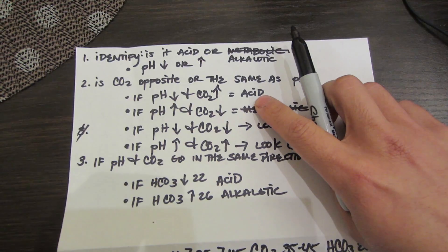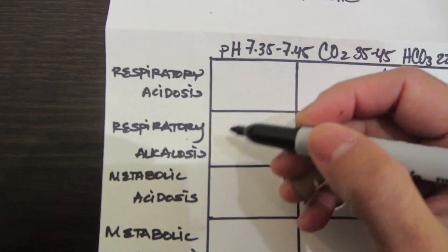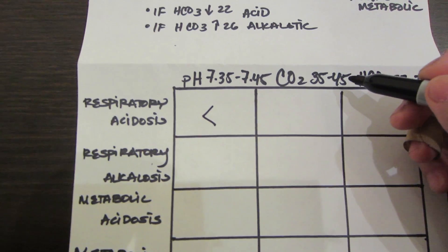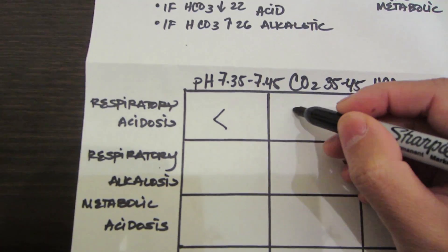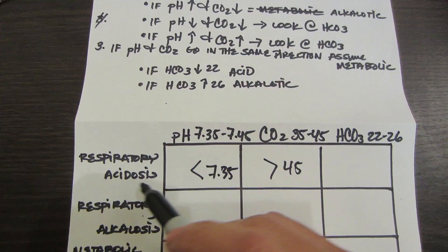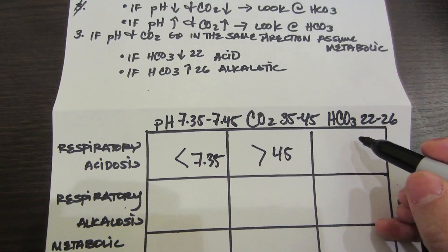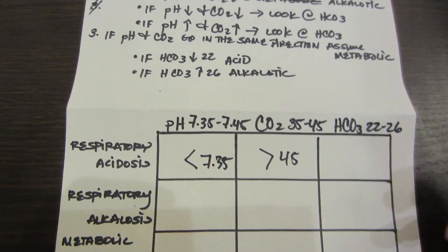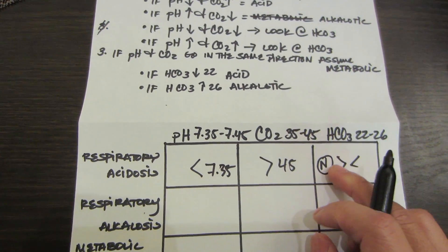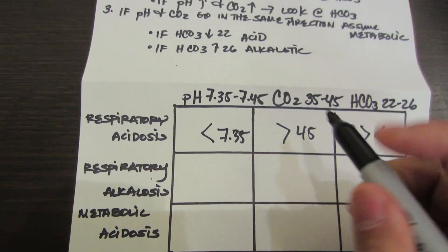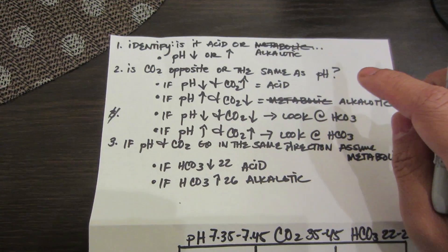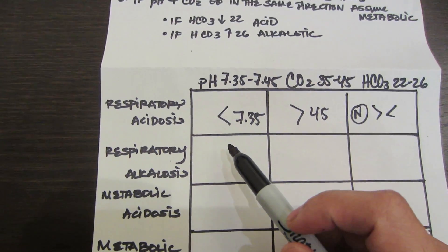Respiratory acidosis: the pH will always be decreased, so it's less than 7.35. The CO2 is greater than 45. Less than 7.35, you're talking about respiratory acidosis. The HCO3 could be either normal, greater than, or less than - not really too particular on this because we're just basically looking at these two to identify whether or not it is acid or if it is alkalotic.